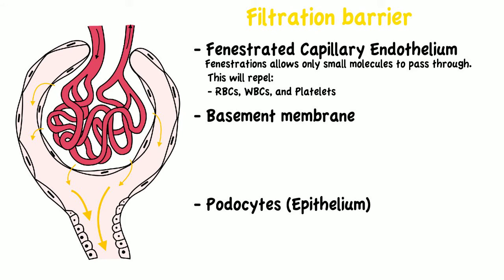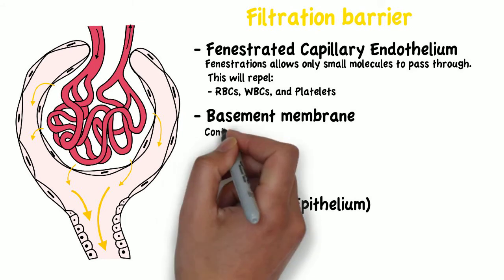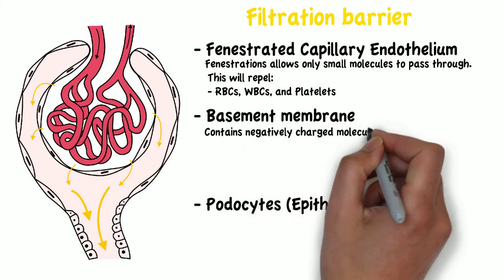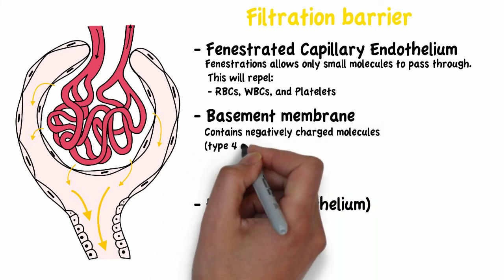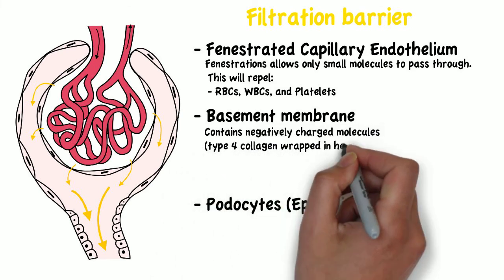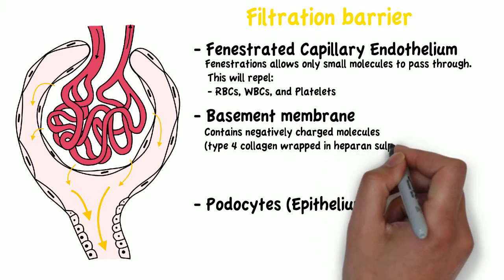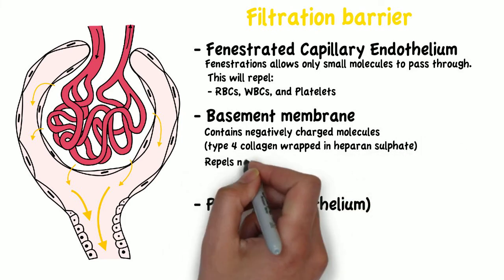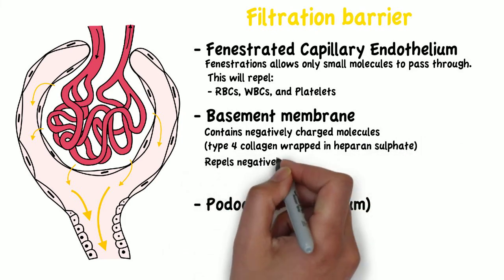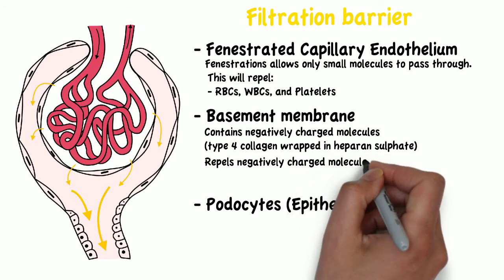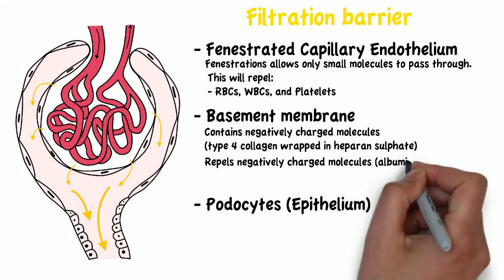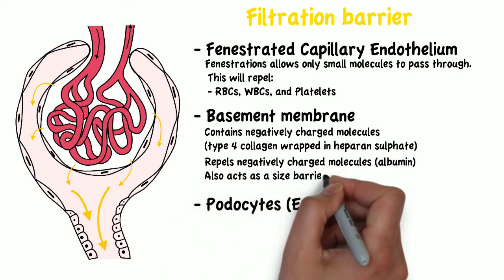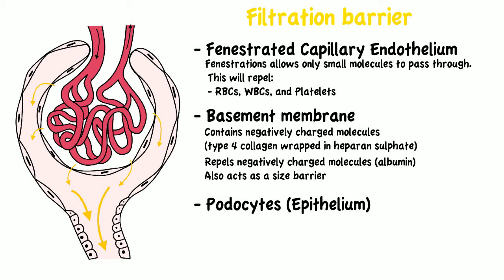Next we have the basement membrane, which contains negatively charged molecules, namely type 4 collagen wrapped in heparin sulfate. As a result, the basement membrane will repel negatively charged molecules such as albumin, and it also acts as a size barrier allowing only small molecules through.